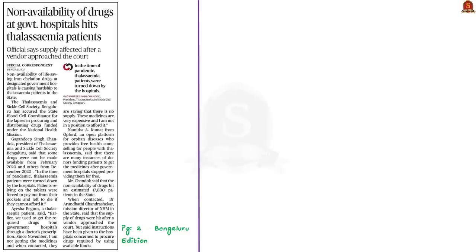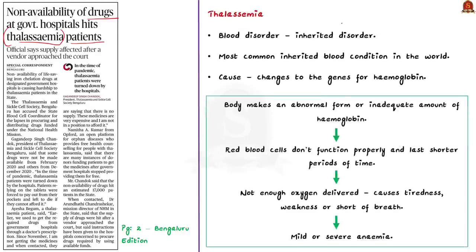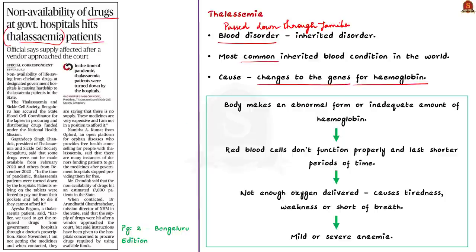The next news article reports that thalassemia patients are not getting the drug they need. Thalassemia is a blood disorder passed down through families — an inherited disorder. It is the most common inherited blood condition in the world, caused by changes to genes for hemoglobin. Hemoglobin is a protein in red blood cells that carries oxygen around the body. In thalassemia, the body makes an abnormal form or inadequate amount of hemoglobin.